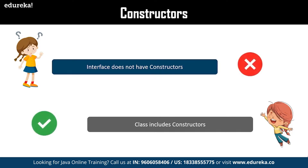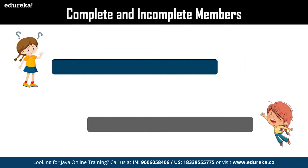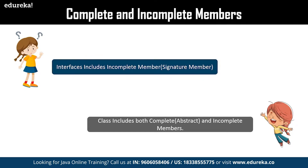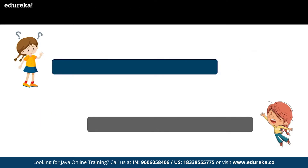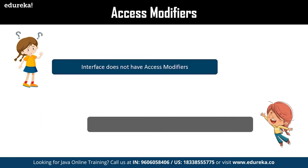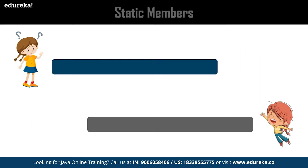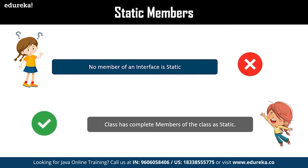The next difference is constructors — interface does not have constructors while classes include them, which helps to set values to members of an object. The next one is complete and incomplete members — interfaces comprise only methods with signatures, while classes include both data members (abstract members) and methods (signature members). Regarding access modifiers, interfaces do not have access modifiers and by default take public, whereas classes provide private access modifiers. Finally, interface cannot have any static members whereas a class has all its members as static.